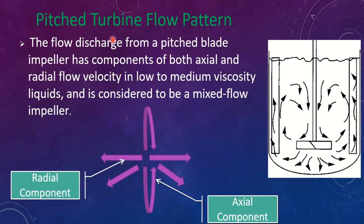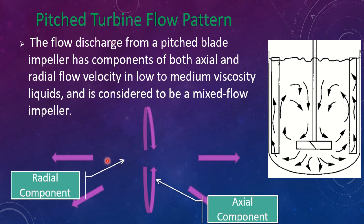Regarding the pitched turbine flow pattern, the flow discharge from a pitched blade impeller has components of both axial and radial flow velocity. In low to medium viscosity liquid, it is considered to be a mixed-flow impeller because it produces both radial and axial components. The radial component directs flow outward toward the wall of the container, while the axial component flows along the axis of the vessel in upward and downward loops.